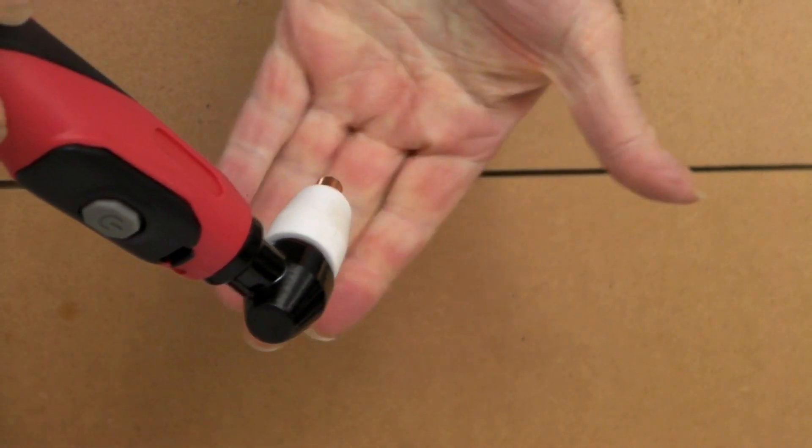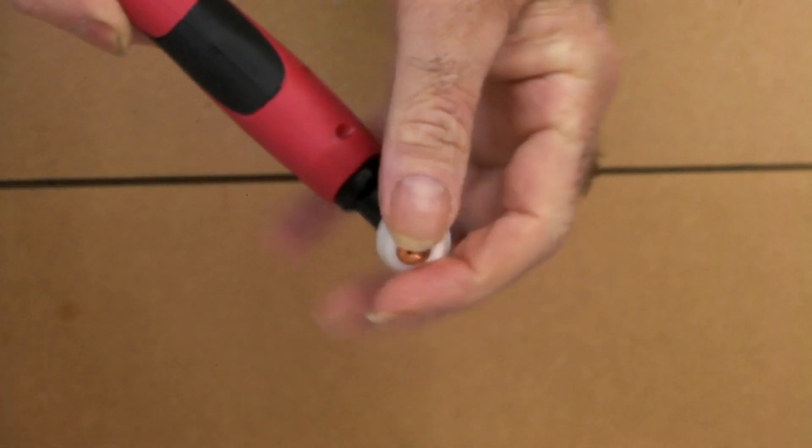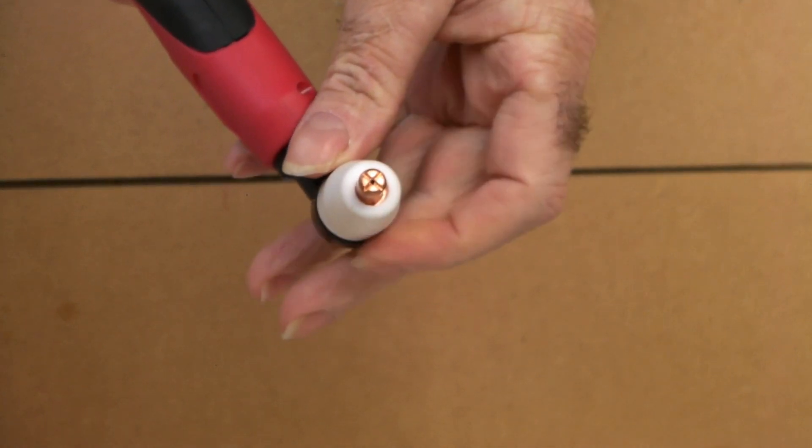Because all the slag that comes out of the end of your tip will blow back up and block up the end of your cutting tip and almost destroy your cutting tip instantly.